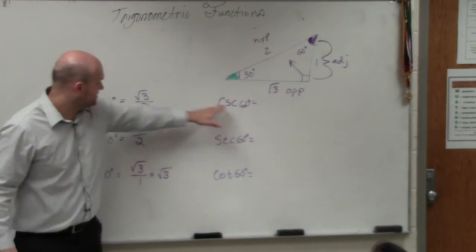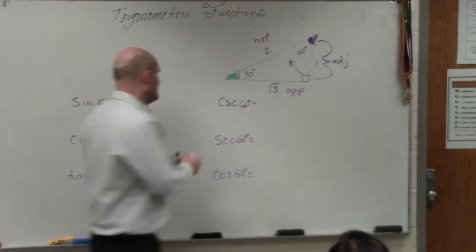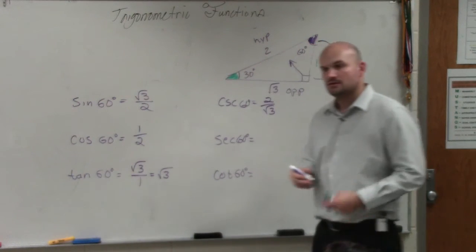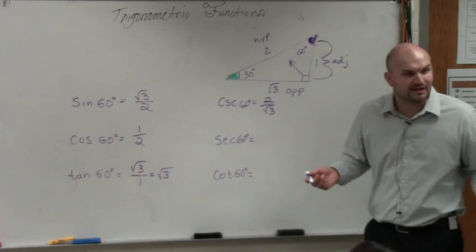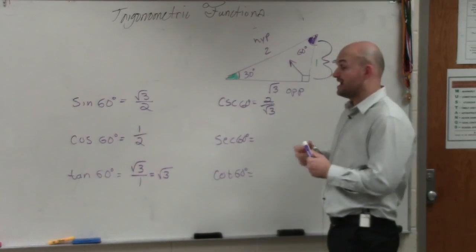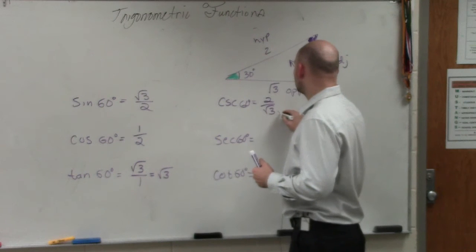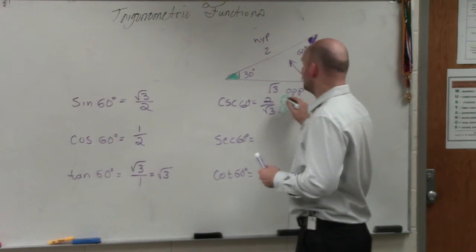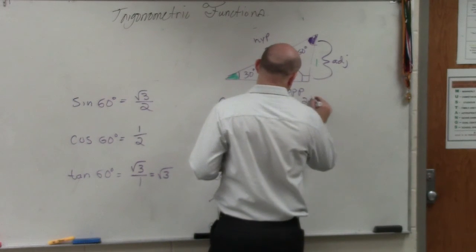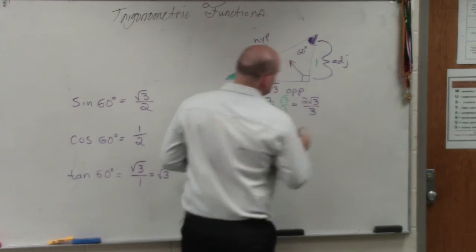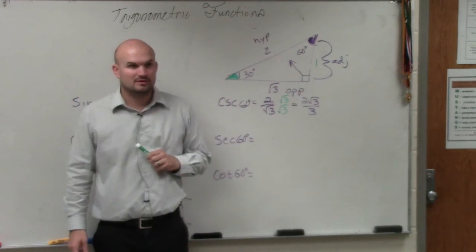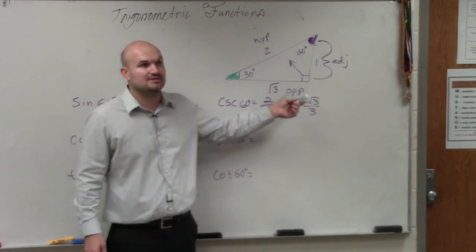So cosecant is the reciprocal of sine. So therefore, this is 2 over the square root of 3. However, we do not want to write a square root in the denominator. So I'm going to rationalize the denominator. I'm going to show you guys rationalizing this denominator for like three examples today. And then I'm going to pretty much stop doing it every single time and just write the answer. So does everybody understand how I got 2 square root of 3 over 3? Because I'm just going to start writing that answer.